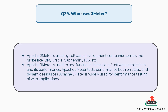Question 39: Who uses JMeter? Apache JMeter is used by software development companies across the globe such as IBM, Oracle, Capgemini, DXC, etc. It is used to test functional behavior and performance of software applications on both static and dynamic resources, and is widely used for performance testing of web applications.